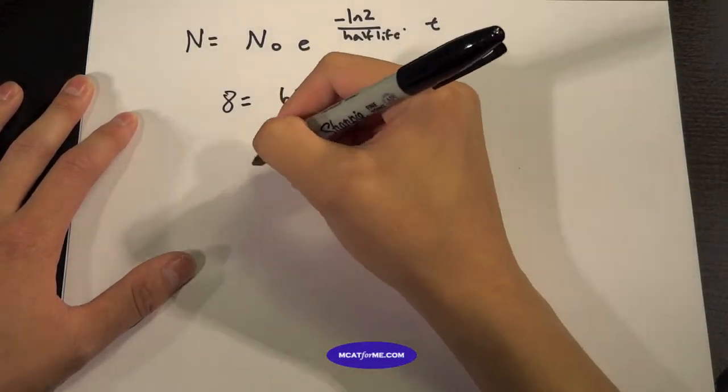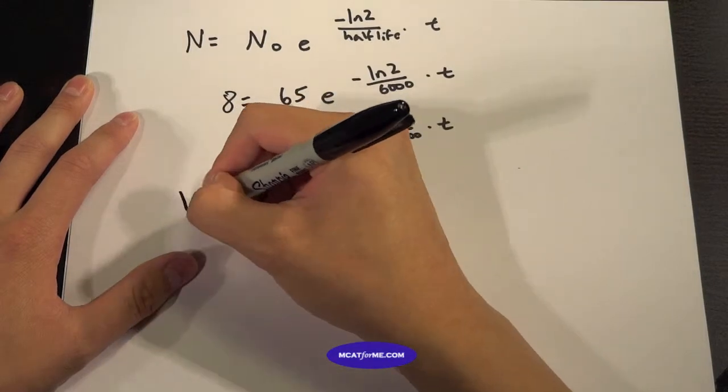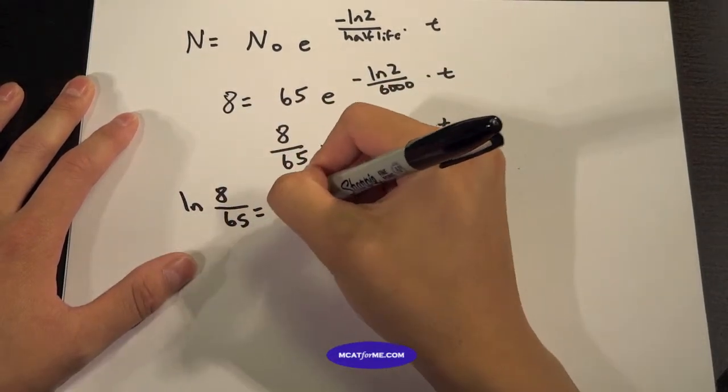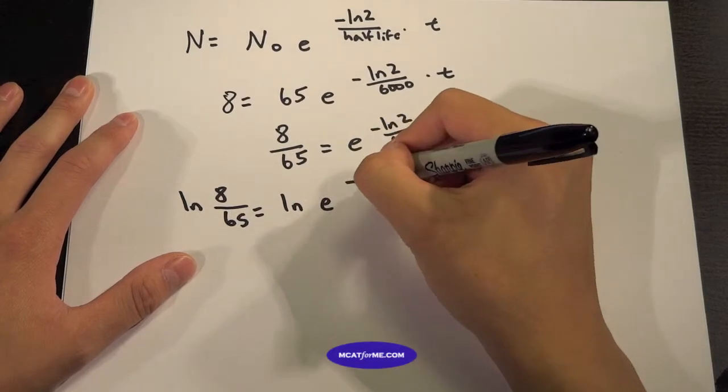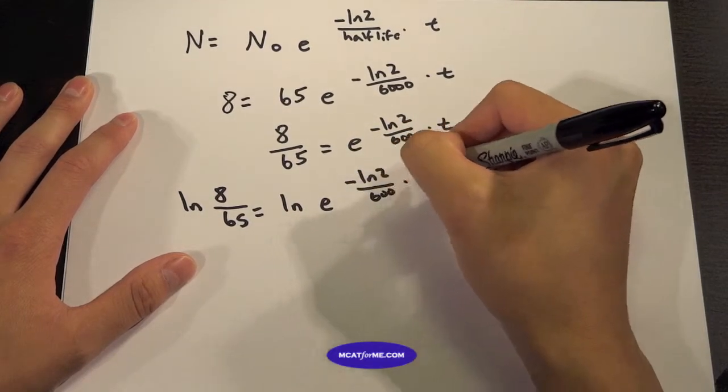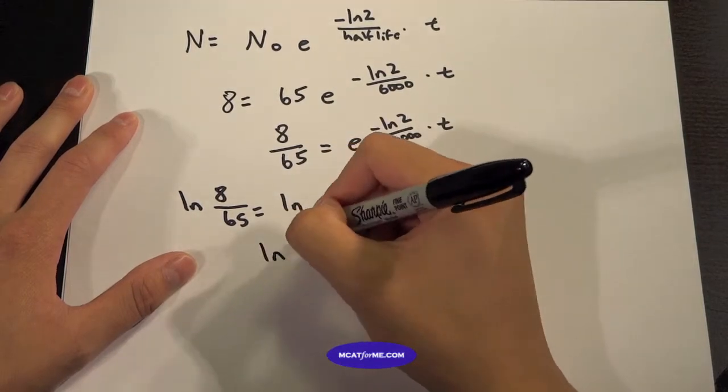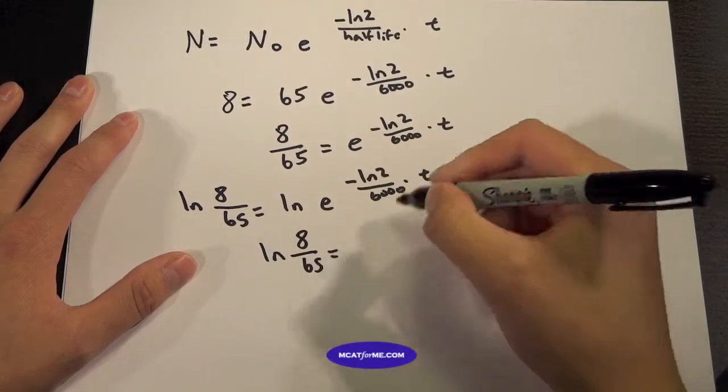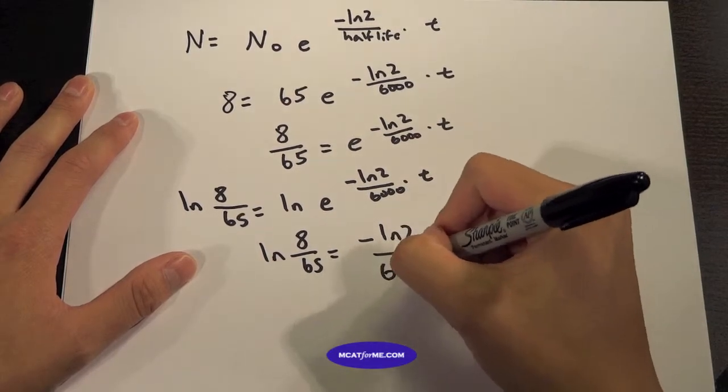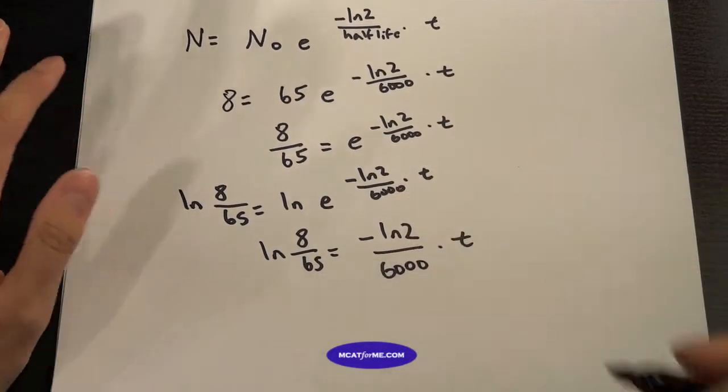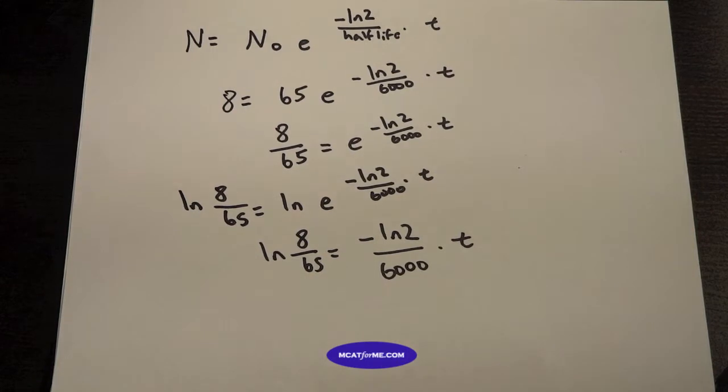And now we can find the natural log of both sides. And so that would be natural log of 8 over 65 equals negative ln2 over 6,000 times t. And we can just move that to the other side and solve for t that way.